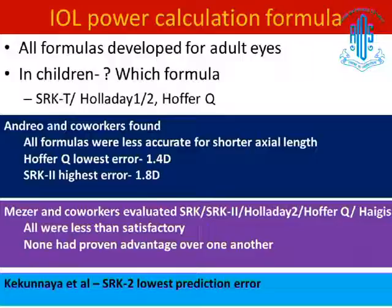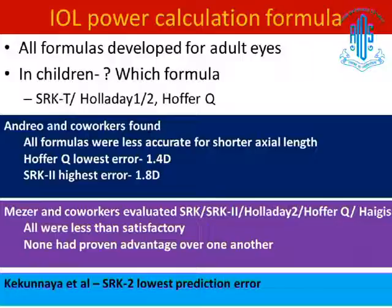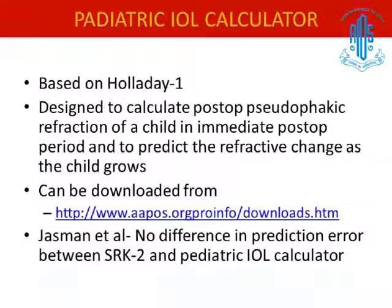Regarding which IOL calculation formula to use — all available formulas today were developed for adult eyes. Studies by Andrew and co-workers found all formulas were less than satisfactory for shorter axial lengths, working better when axial length exceeds 20 mm. Hopper-Q had the lowest error of around 1.4 diopters in their study, while SRK/T had the highest. A study by Mezer et al. found no formula had proven advantage over another, while Kekunia et al. found SRK2 had the lowest prediction error. Thus, either SRK2 or Hopper-Q formula can be used for pediatric IOL power calculation.